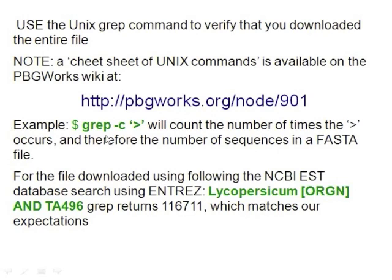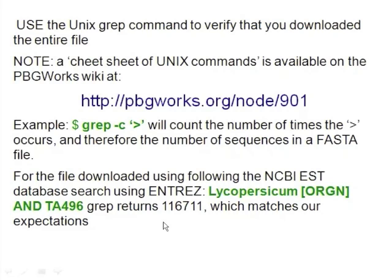One of the Unix commands that we can use is the grep command. The syntax would be grep -c and then something in quotes. By saying -c we're asking grep to simply count the occurrences of what occurs between the quotes. If we use this command targeting the file downloaded using lycopersicum organism and TA-496, the number we get is 116,711, which exactly matches the number that NCBI told us should be there.